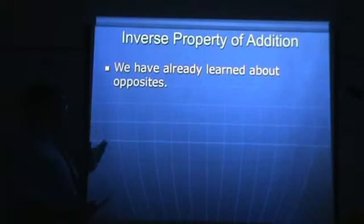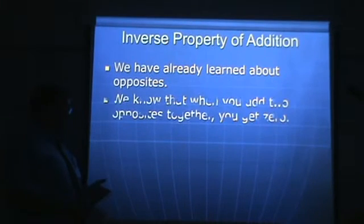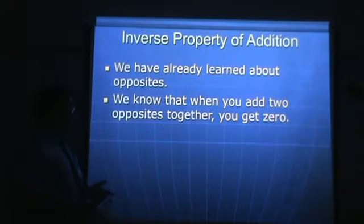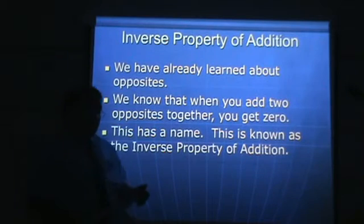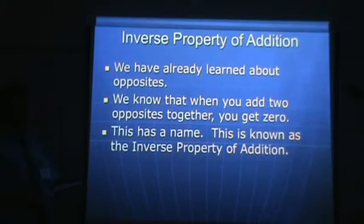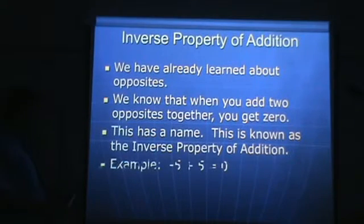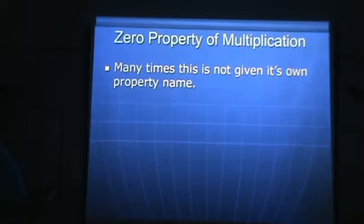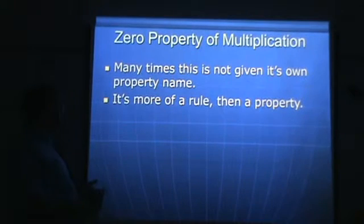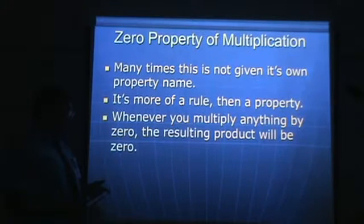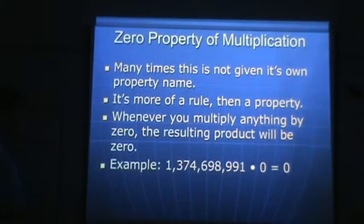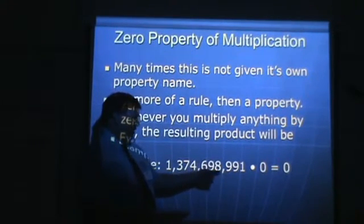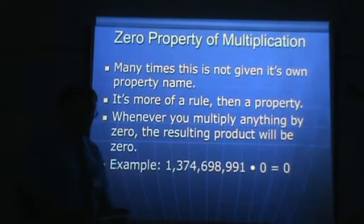Inverse property of addition — we have already learned about opposites, and we know that when you add opposites, you get zero. This is just putting a new name to it: the inverse property of addition. When you add a number and its inverse or opposite, the result is zero. For example, negative five plus five gives you zero. Zero property of multiplication: whenever you multiply anything by zero, the resulting product will be zero. If I take one billion, 374 million, 698,991 and multiply that by zero, the result will be zero — it doesn't matter how big or small the number is.